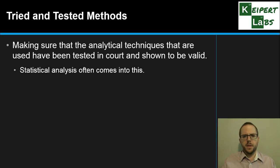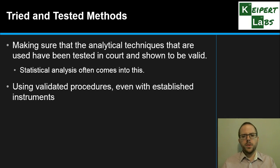So the first one, tried and tested methods. Making sure that the techniques that we use for analyzing evidence have been tested in court and are shown to be valid. So they're well documented. Statistical analysis is often a tool that would be used to demonstrate the effectiveness of a technique and to back up its use in particular examinations. This can take time, but also making sure that the procedure that we use, even for instruments that have been used very thoroughly before, has been well checked, that we're not using it in a way that is invalid.